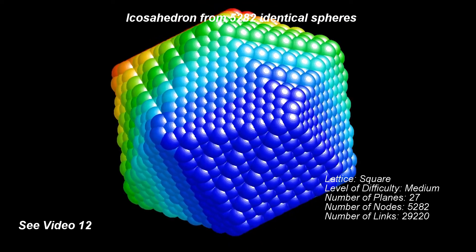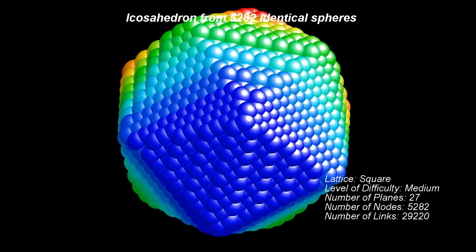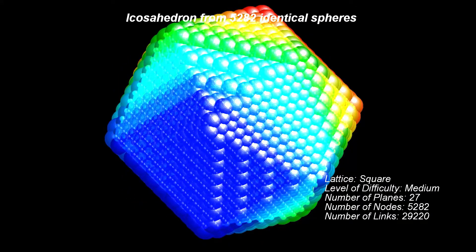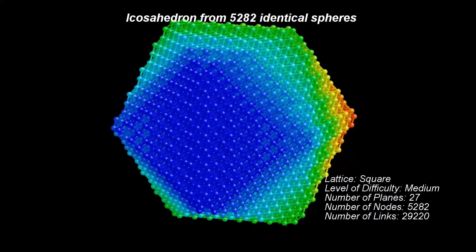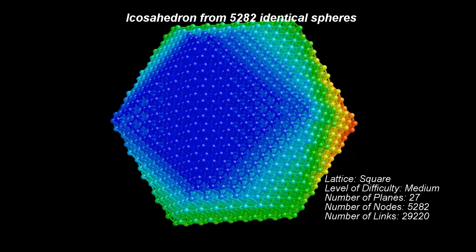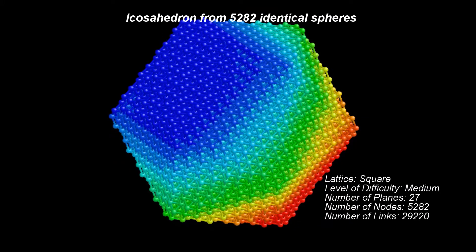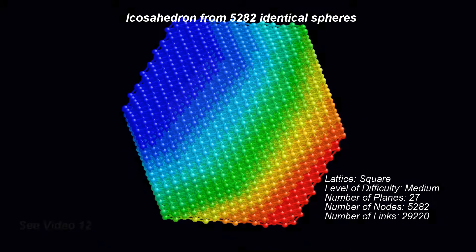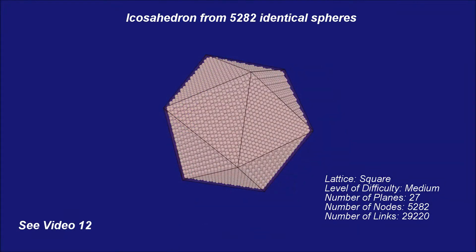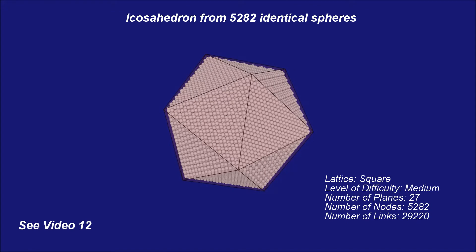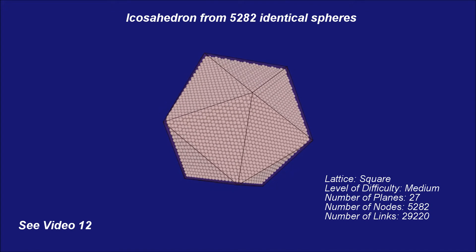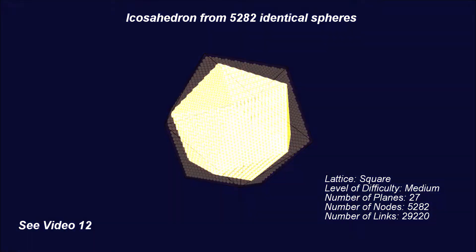As we have done before, we will get to this pattern in CPS by starting from the Icosahedron assembled from identical spheres. There is a full video in this series dedicated to the Icosahedron in CPS.